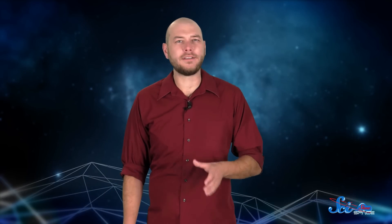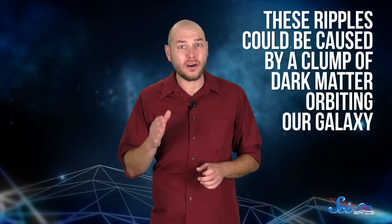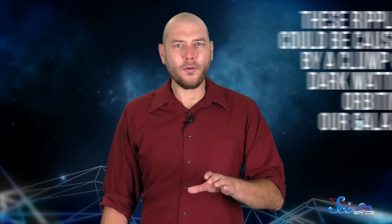Back in 2009, two researchers, Sukanya Chakrabarty and Leo Blitz, analyzed variations in the distribution of gas at the edges of the Milky Way, and they found that these so-called ripples could be caused by a clump of dark matter orbiting our galaxy. In other words, they found evidence of a new dwarf galaxy, about a hundredth the size of our own, made almost entirely of dark matter.